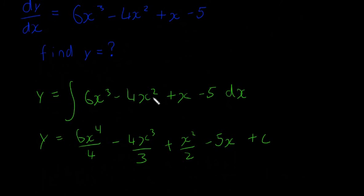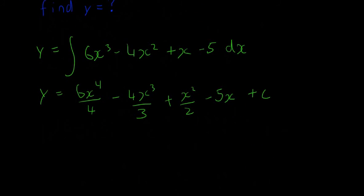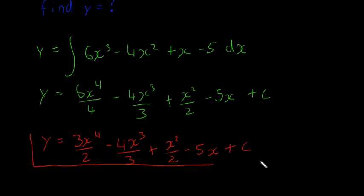I'll scroll down a little bit and finish it in red. So y is going to be equal to 3x⁴ over 2, minus 4x³ over 3, plus x² over 2, minus 5x, plus C. And that's our answer.